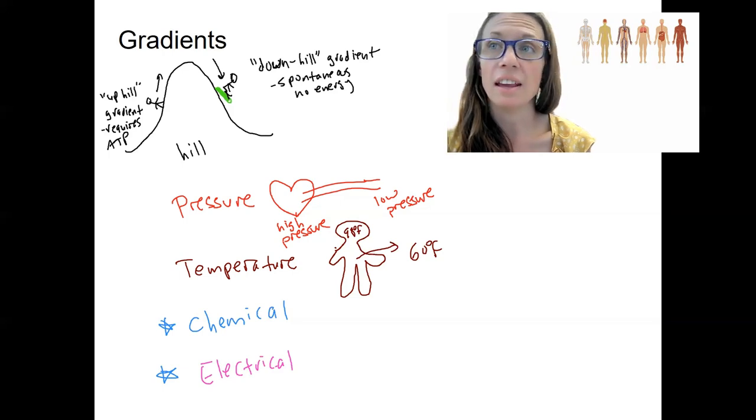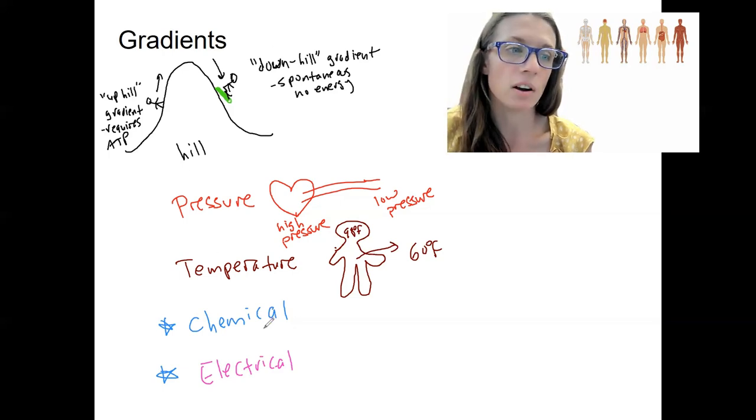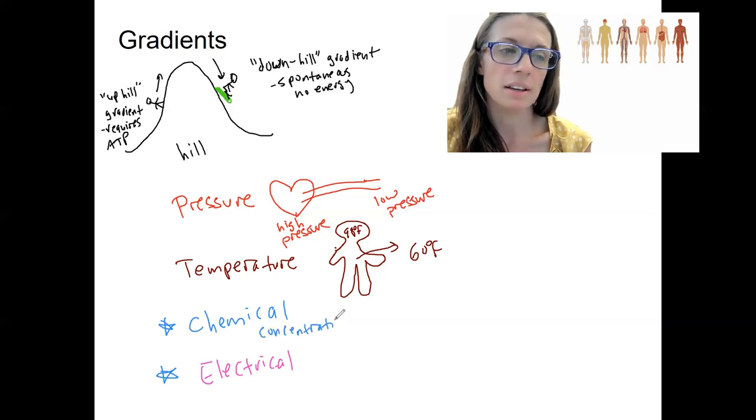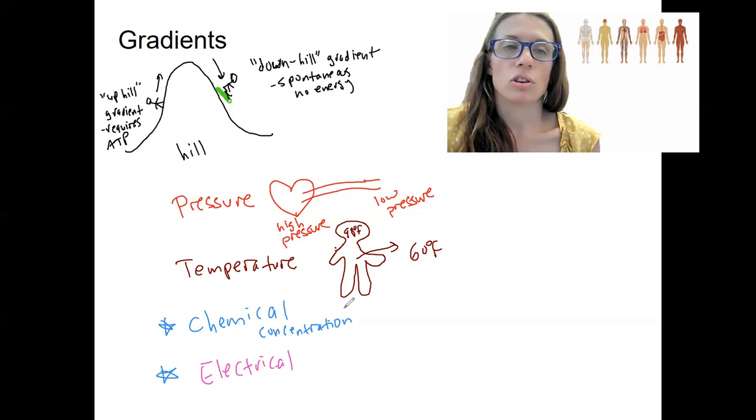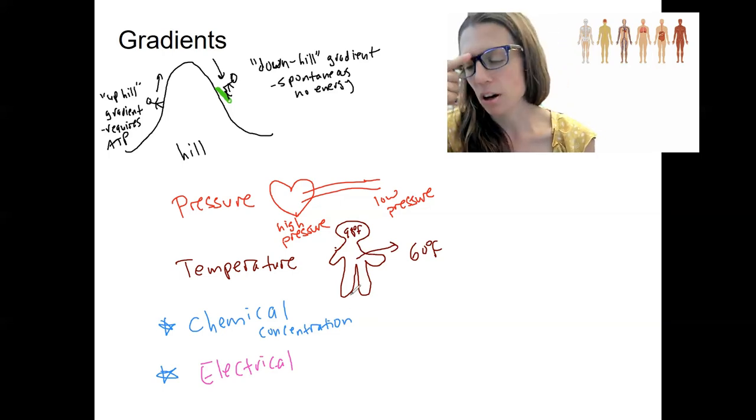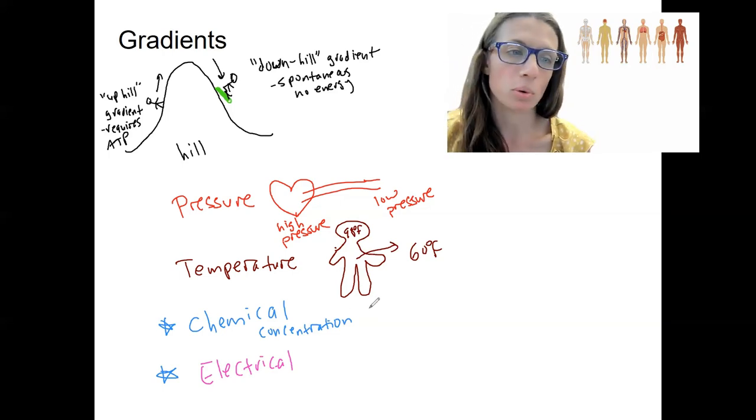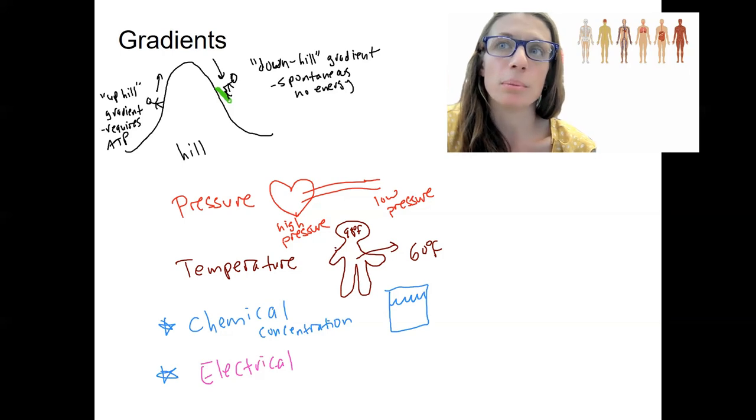The chemical could be sugar, water. Examples from your life: let's say that you've got a glass of water and you put some like food dye in it. That's a gradient, concentration gradient.